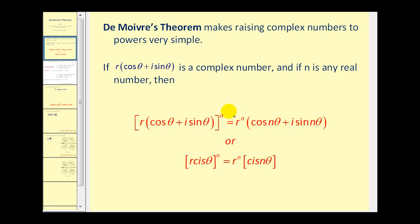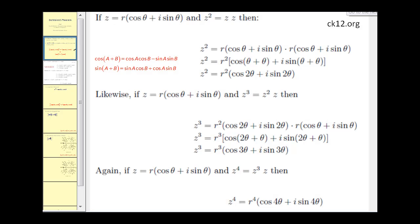This is a very interesting result. The value of n is used for the power of r, but then it's multiplied by theta to find the new angle. Let's see if we can determine where this formula comes from. One way would be to start with a complex number in trig form and square it, or multiply it by itself.